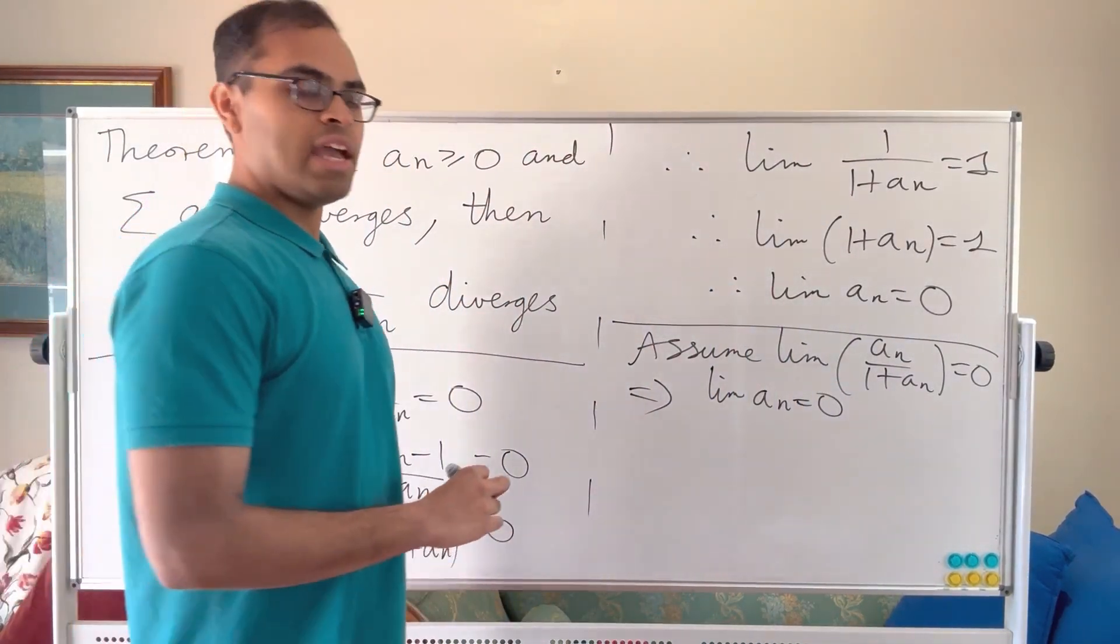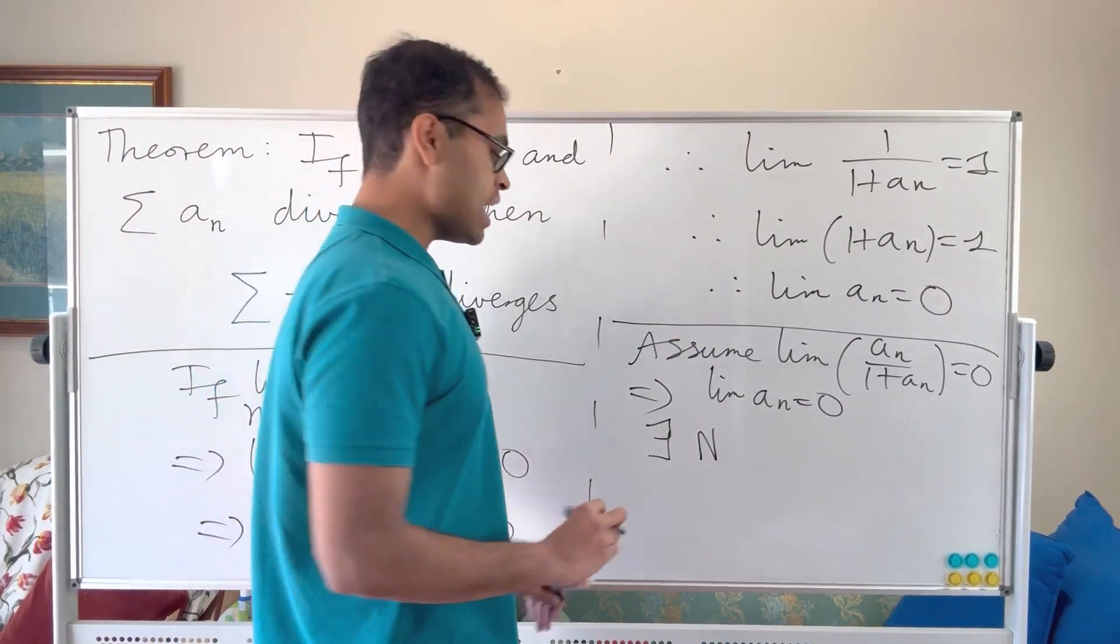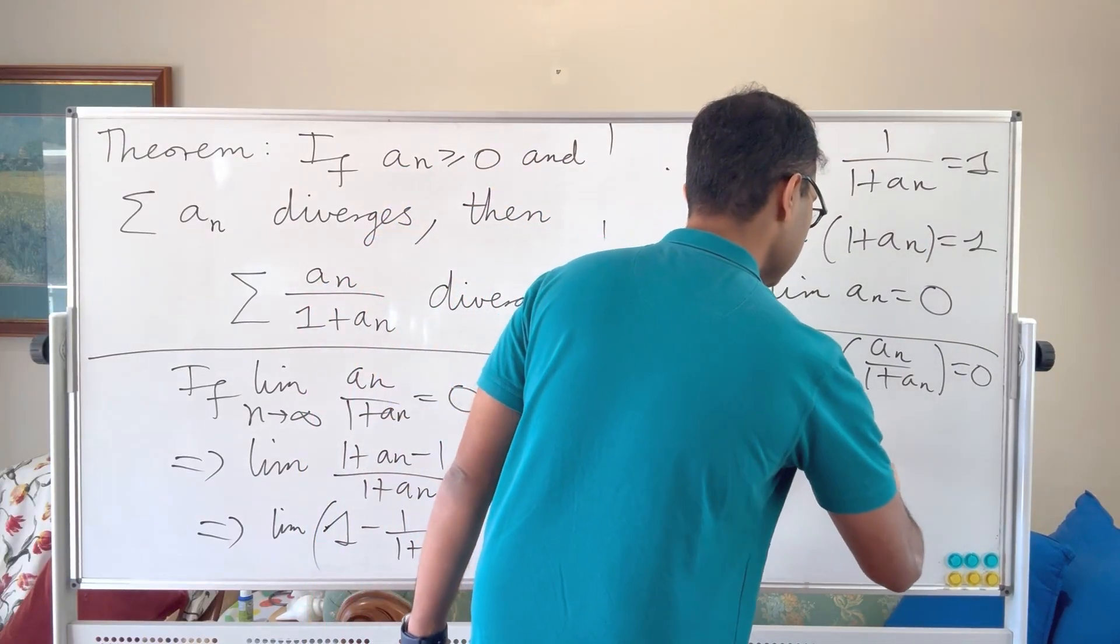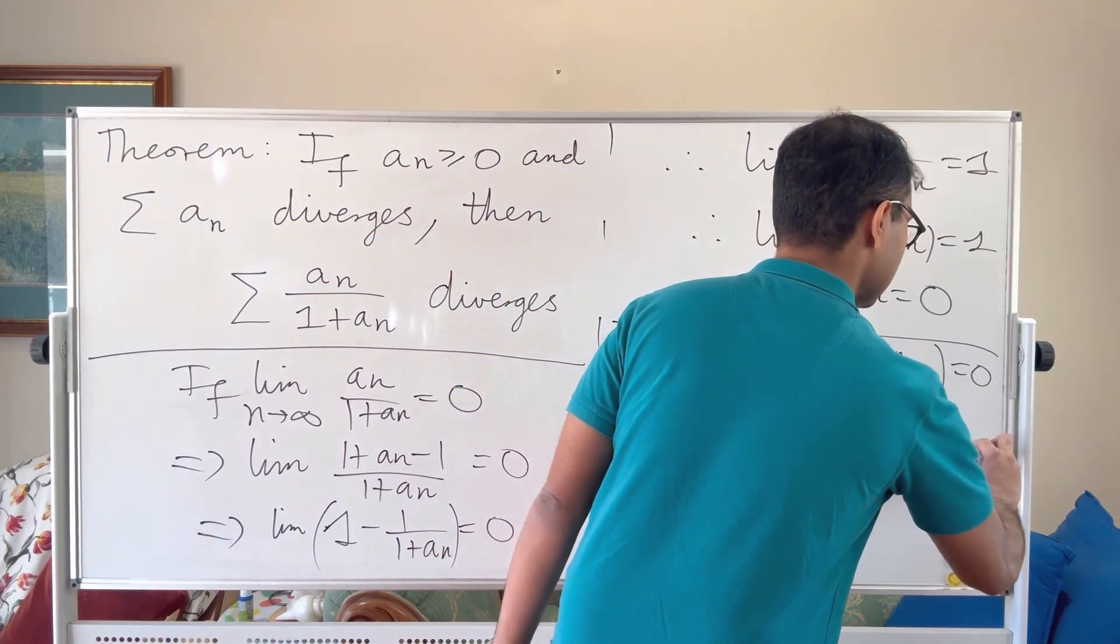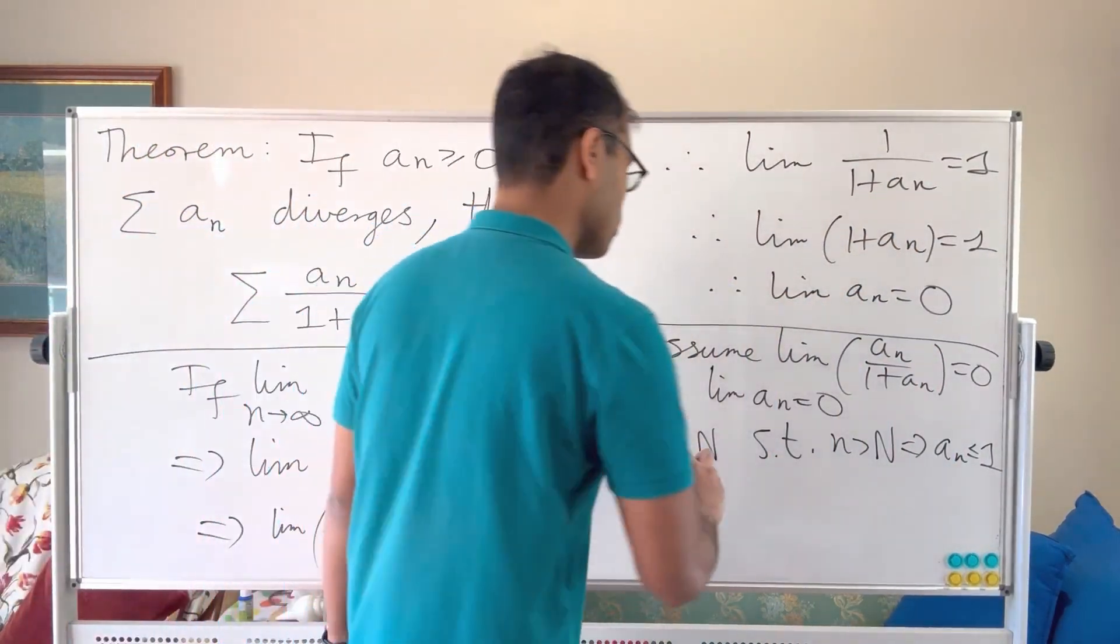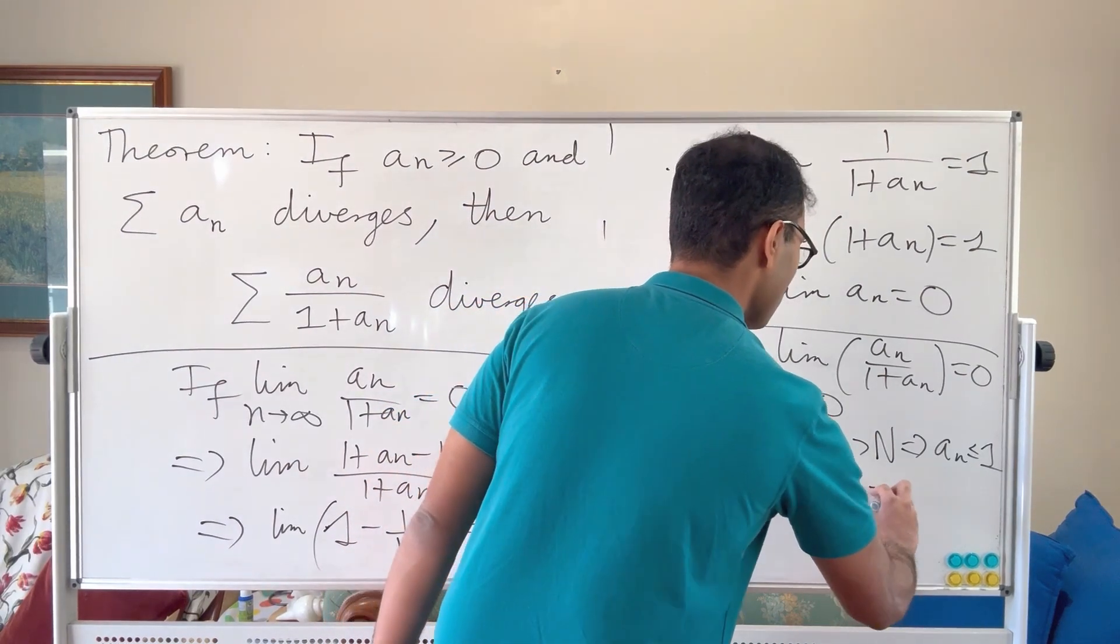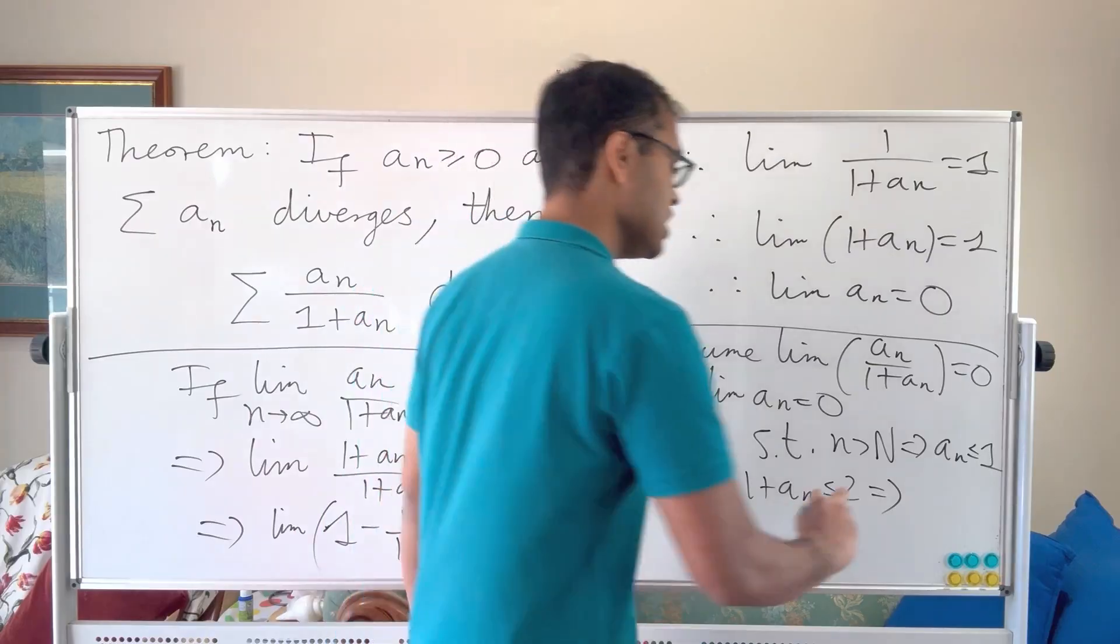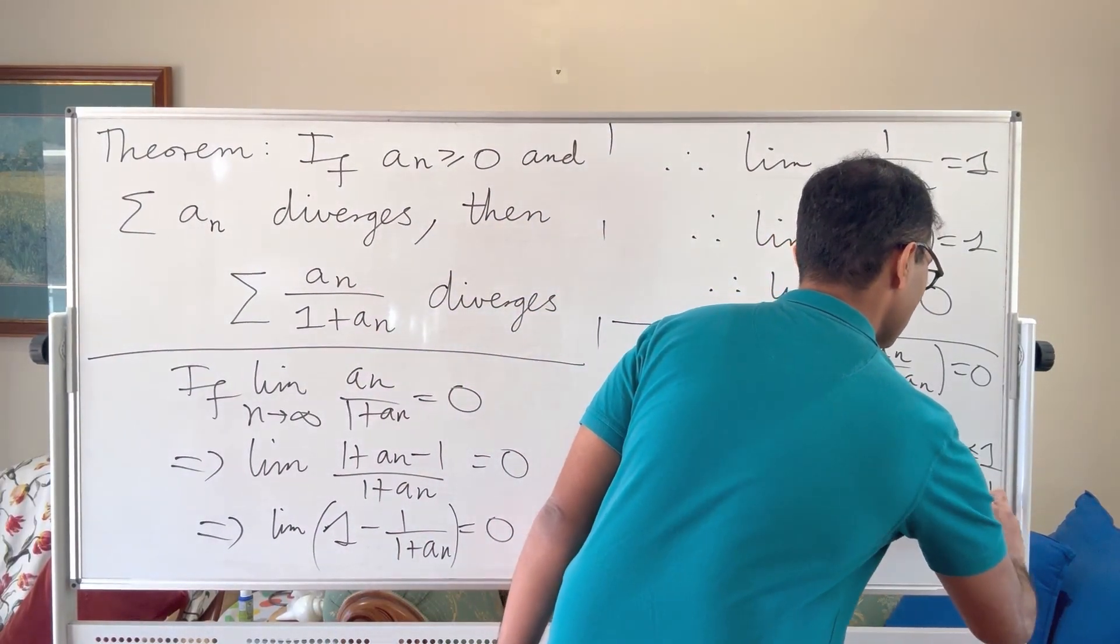Now if limit of an equals 0, there exists n sufficiently large, there exists big N such that little n greater than big N implies that an is going to be less than or equal to 1. Now we know that an is less than or equal to 1, that implies that 1 plus an is less than or equal to 2, which in turn implies that taking the reciprocals flips the inequality, 1 over 1 plus an is going to be greater than or equal to 1 half.